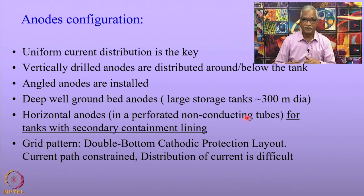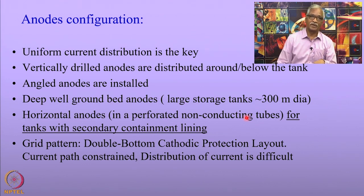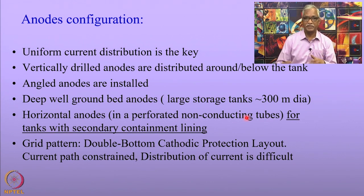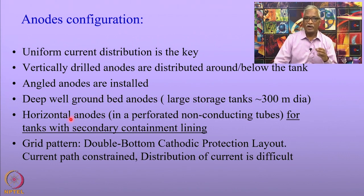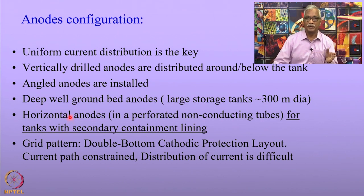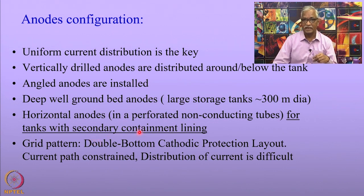With deep well ground bed anodes, the current distribution range is much larger and it is easy to maintain a remote anode. Horizontal anodes are also used where deep well ground bed anodes are not possible, and for tanks with secondary containment linings.